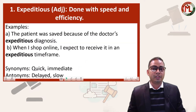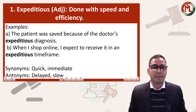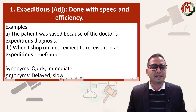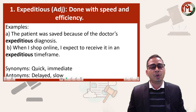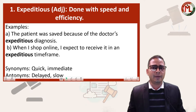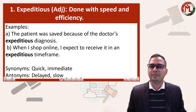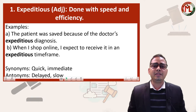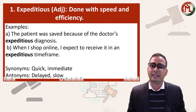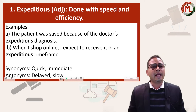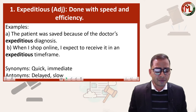The first word in the list is 'expeditious.' This word belongs to the adjective family. The verb form of this word is 'expedite.' Expedite means to get work done speedily. The word 'expeditious' means done with speed and efficiency.